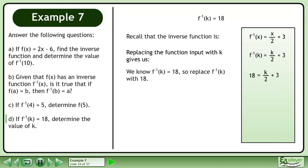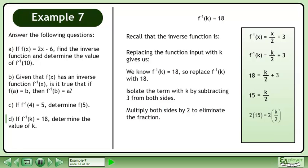We know f inverse at k equals 18, so replace f inverse at k with 18. Isolate the term with k by subtracting 3 from both sides. Multiply both sides by 2 to eliminate the fraction. The answer is k equals 30. The point 30, 18 exists on the inverse graph.